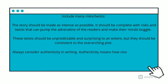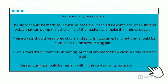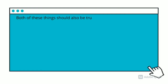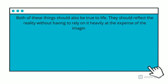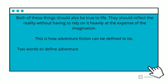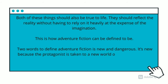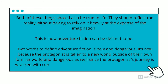Always consider authenticity in writing. Authenticity means how close the story is to the truth. The storytelling should be realistic within the context of its own world, and the words and actions of characters should be true to themselves. Both of these things should also reflect reality without relying on it heavily at the expense of imagination. Two words to define adventure fiction are 'new' and 'dangerous.' It is new because the protagonist is taken to a world outside their familiar world, and dangerous because the protagonist's journey involves constant danger that moves the plot forward.